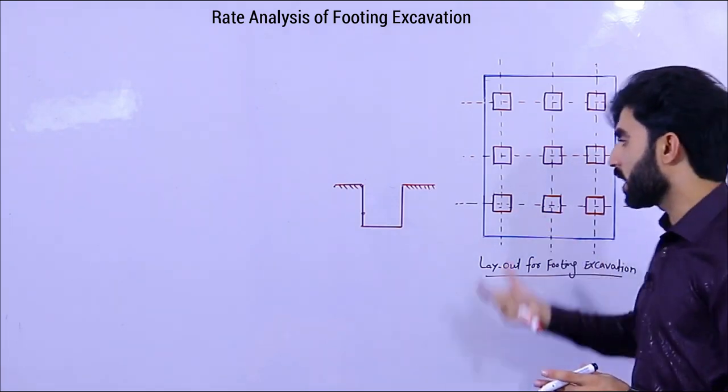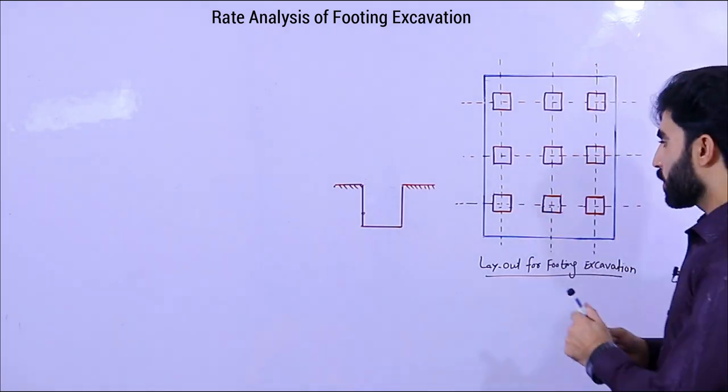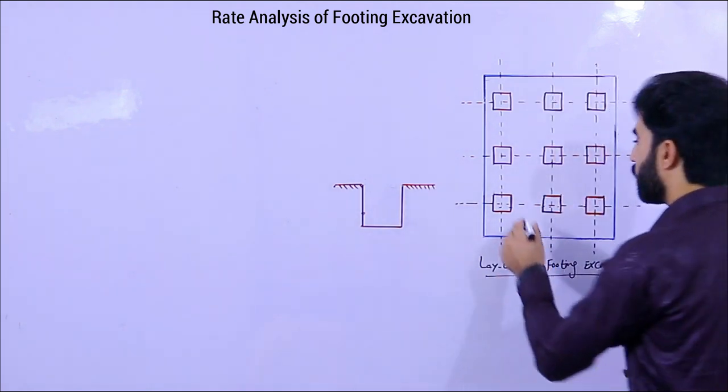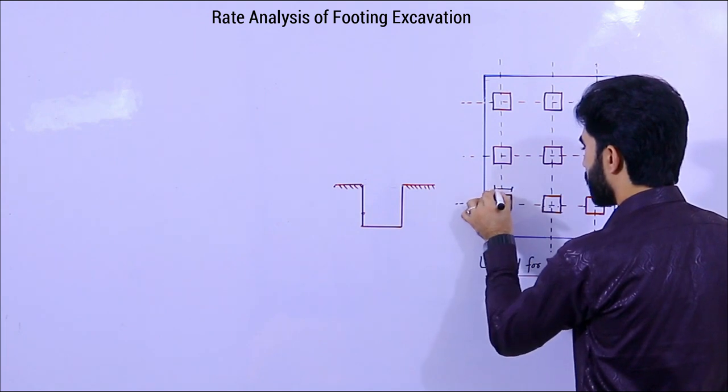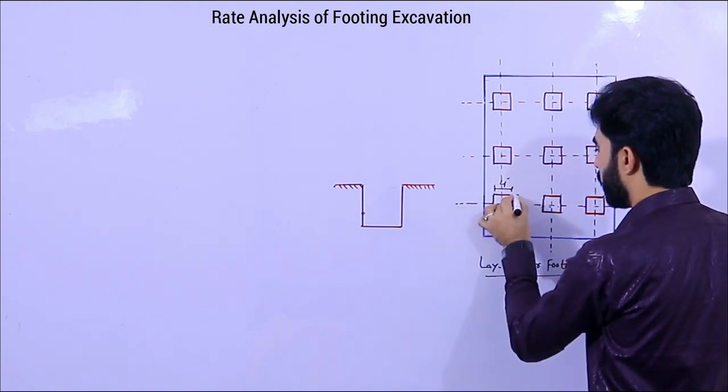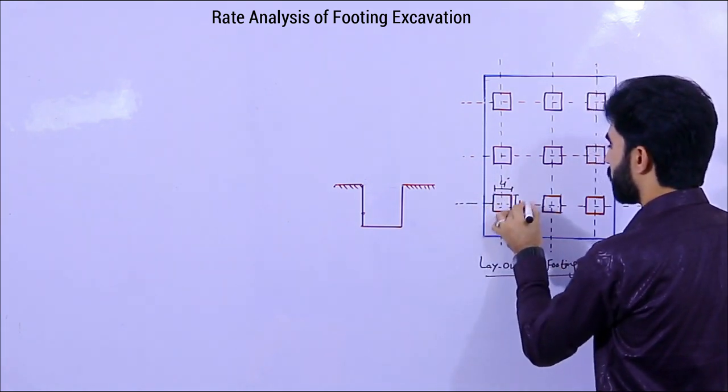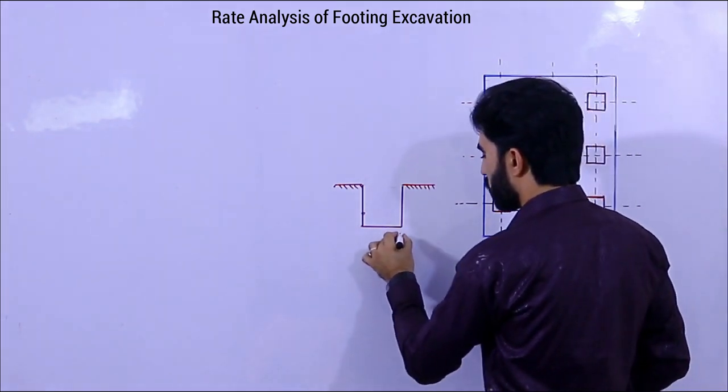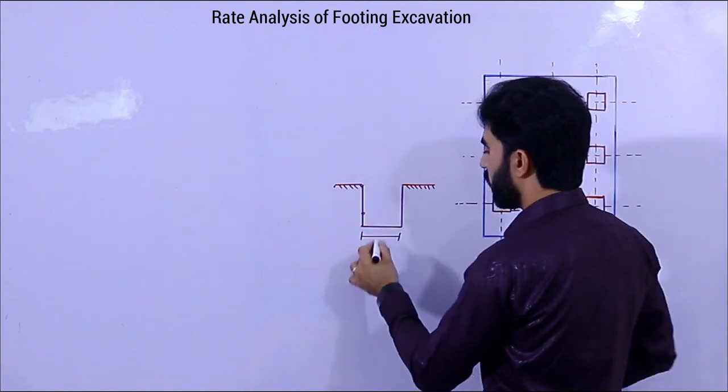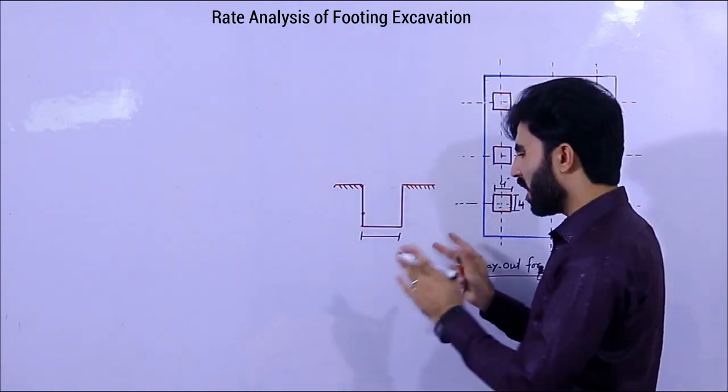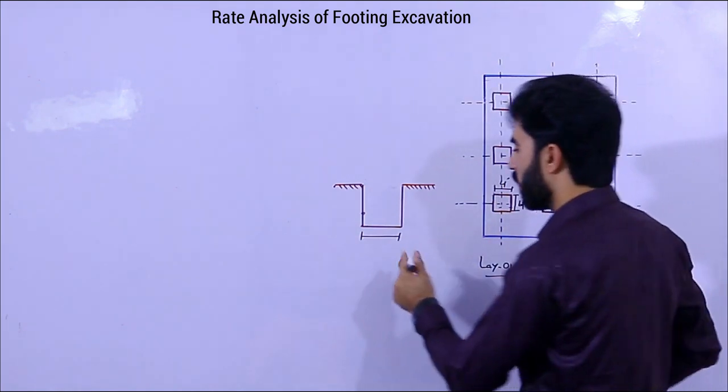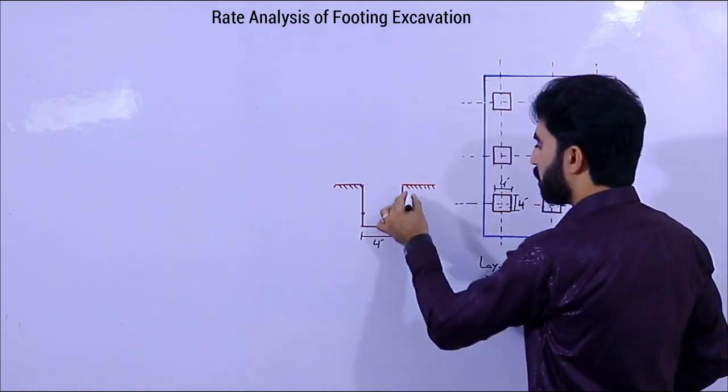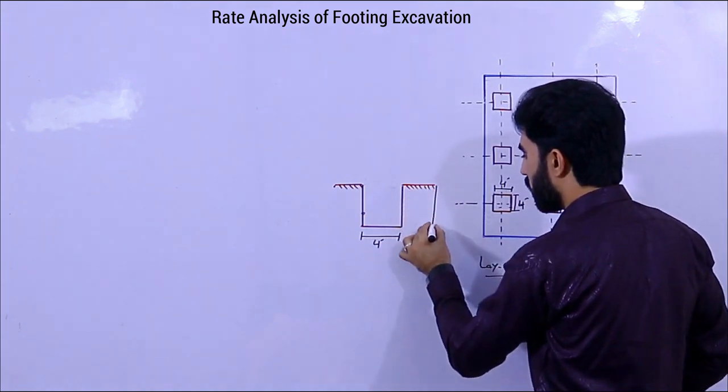Now I will find out its rate analysis. The size of each footing is 4 feet by 4 feet. As you can see in the section, the width of the footing - because this is a square footing - the footing width is 4 feet and the depth is 5 feet.